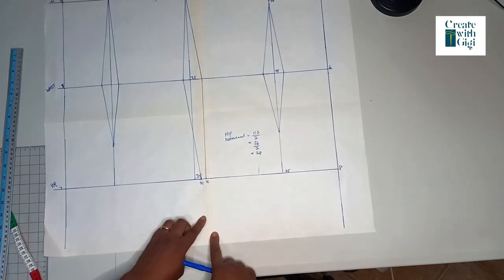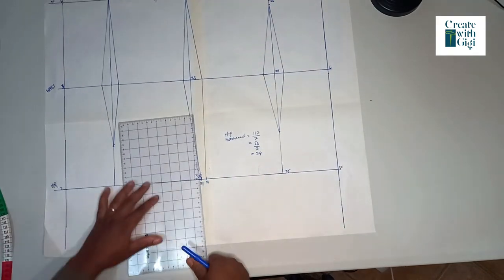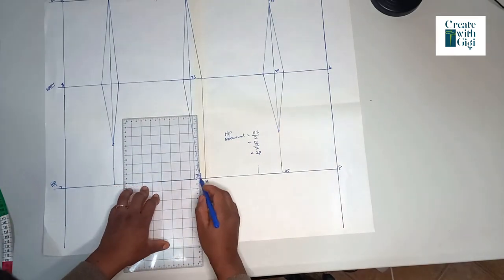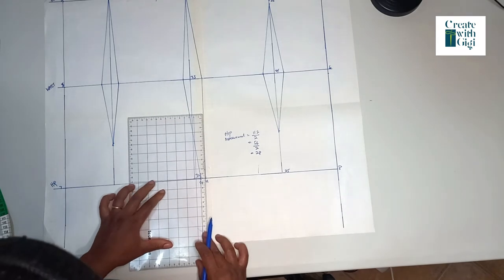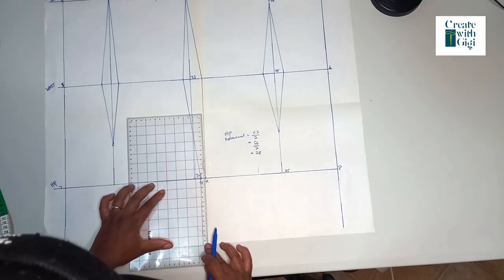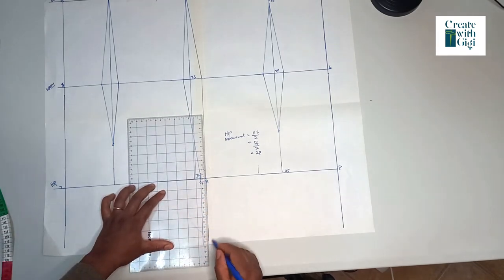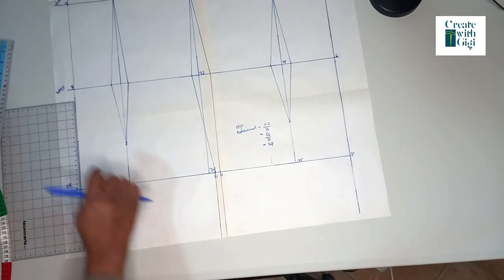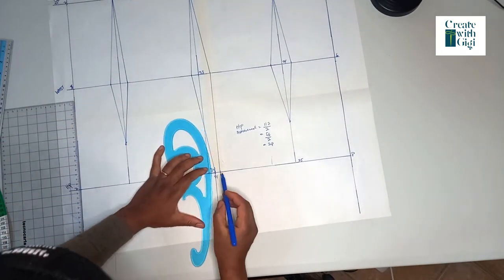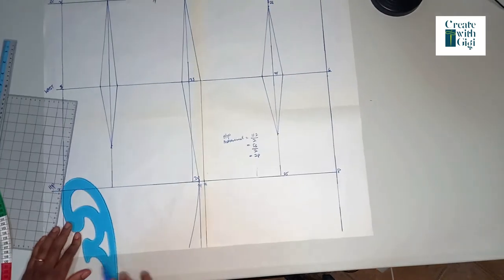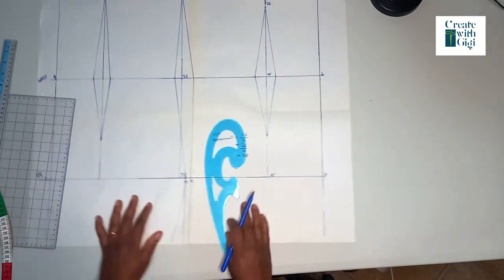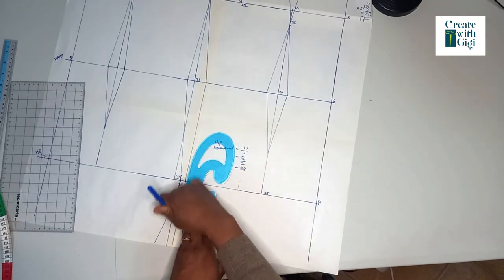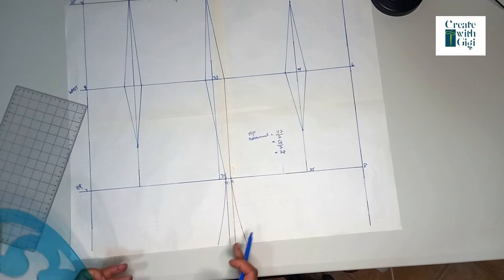If you decide to extend this downwards and make it into something like a dress, you can just draw a straight line down from the hip points, and then curve it a little with your French curves. There you have it - this is more like a dress block now. You have a modified dress block.